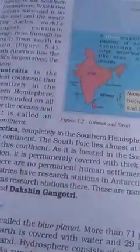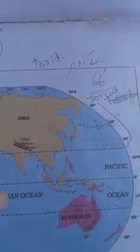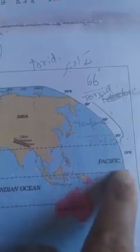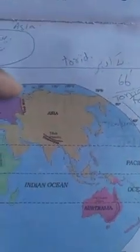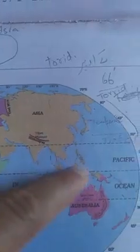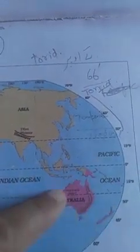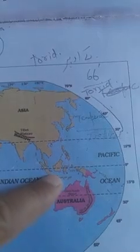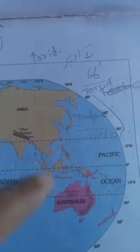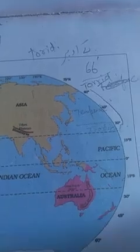Let me show you this Australian continent on the world map. This is the world map. This is the equator, zero degrees. This is the Northern Hemisphere and this is the Southern Hemisphere. So Australia lies completely in the Southern Hemisphere.